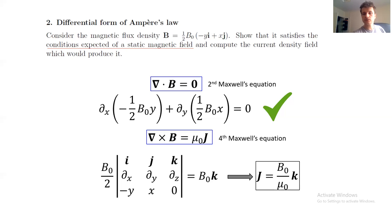the final answer for the current is B0 divided by mu0. So far, these exercises were rather simple. The following exercise is the real deal.